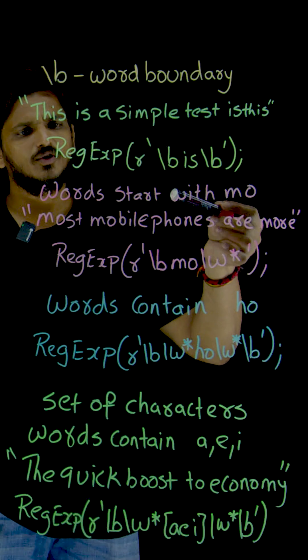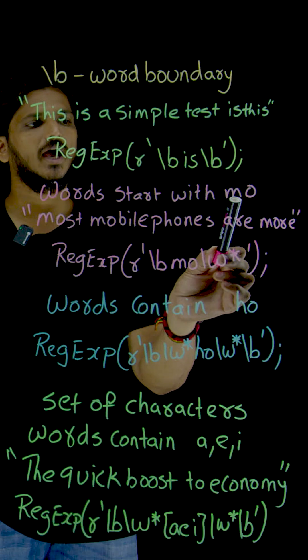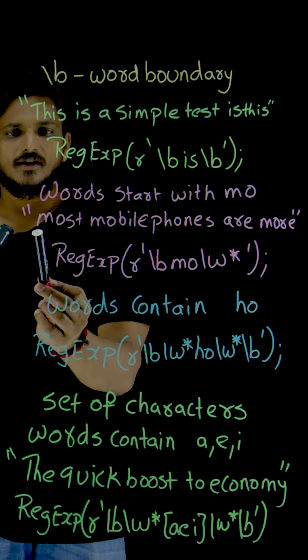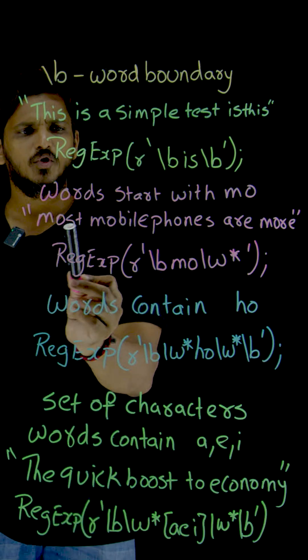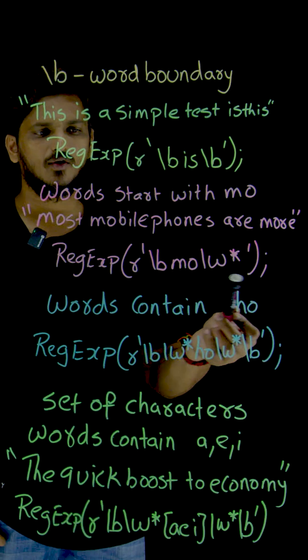Now let's understand more with the next example. Words starting with M-O. We need to identify words that start with M-O. See here, take an example: 'Most mobile phones are more'. This is the sentence we have.